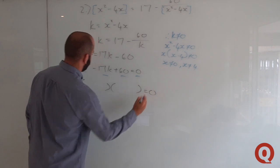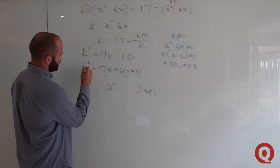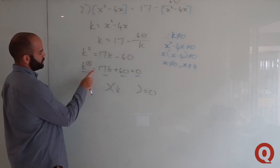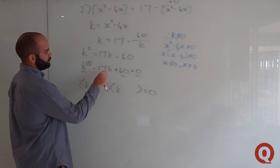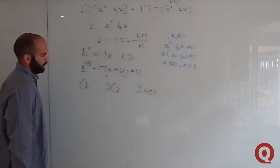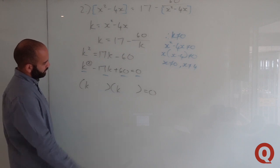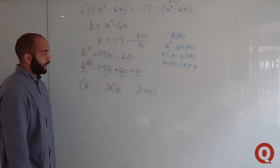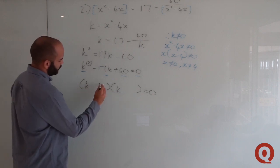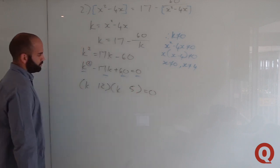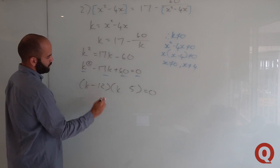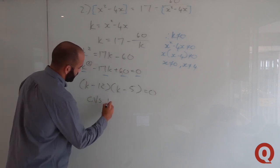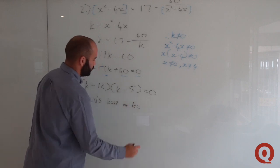To factorize k²−17k+60 = 0, we need two numbers that multiply to 60 and add to −17. That would be −12 and −5, since 12×5 = 60 and 12+5 = 17, with both being minus. So we get (k−12)(k−5) = 0, giving critical values k = 12 or k = 5.